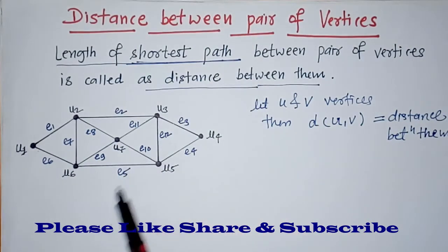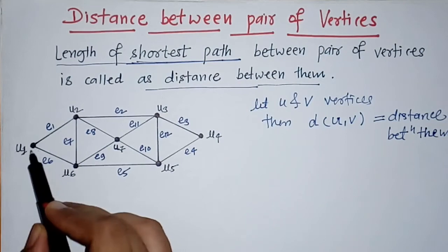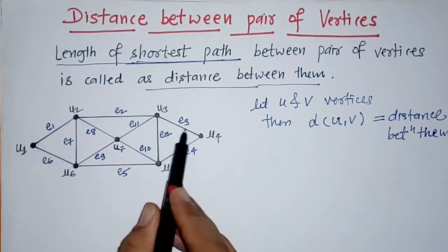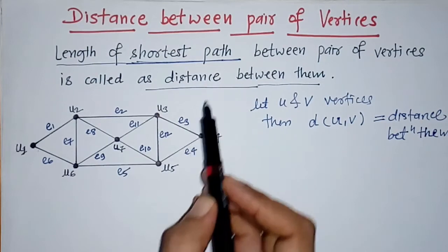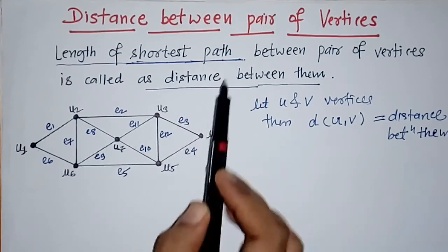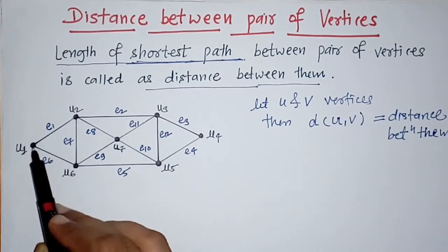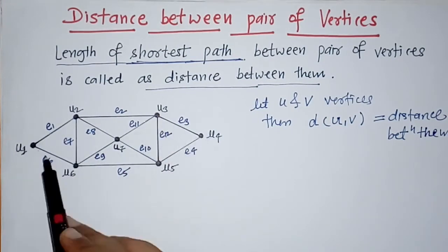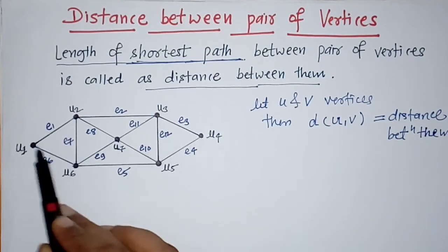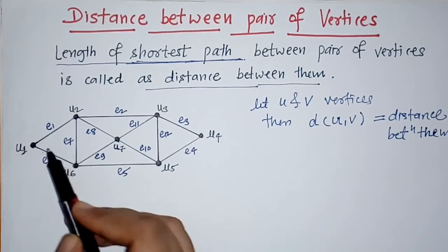A path is the way by which we can travel from one vertex to another vertex in a graph. We can find a path between any pair of vertices. A path is a walk by which we can travel from one vertex to another vertex without repetition of edges and vertices. For example, we can travel from vertex u1 to u4 by way of u1-u2-u3-u4, or by u1-u6-u5-u4, among other ways.